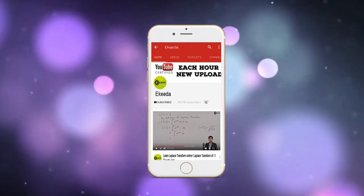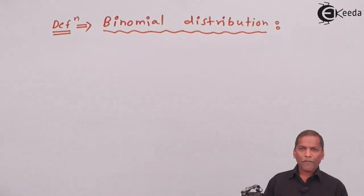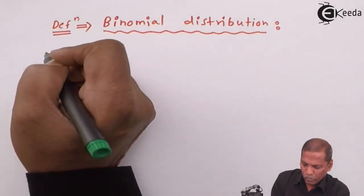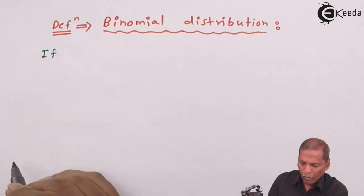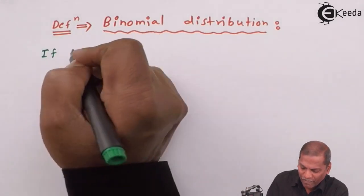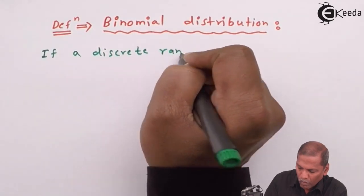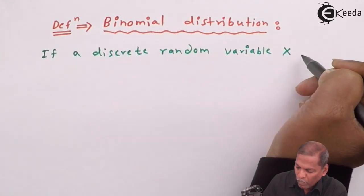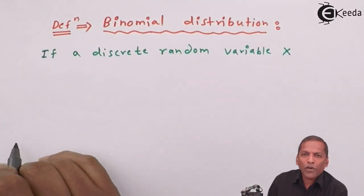Now we see the definition of binomial distribution. If a discrete random variable X taking values from 0, 1, 2, 3, up to n